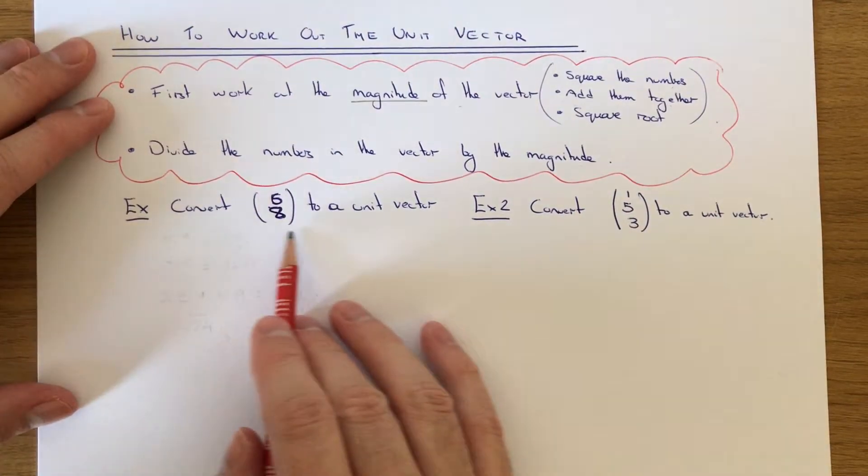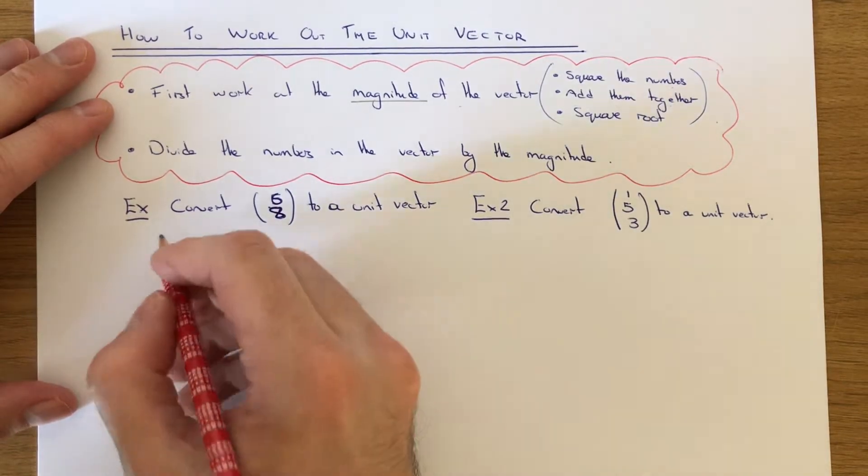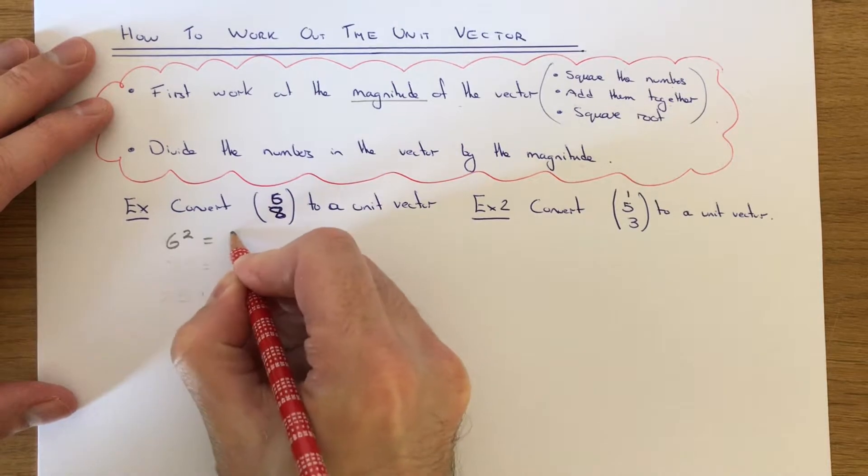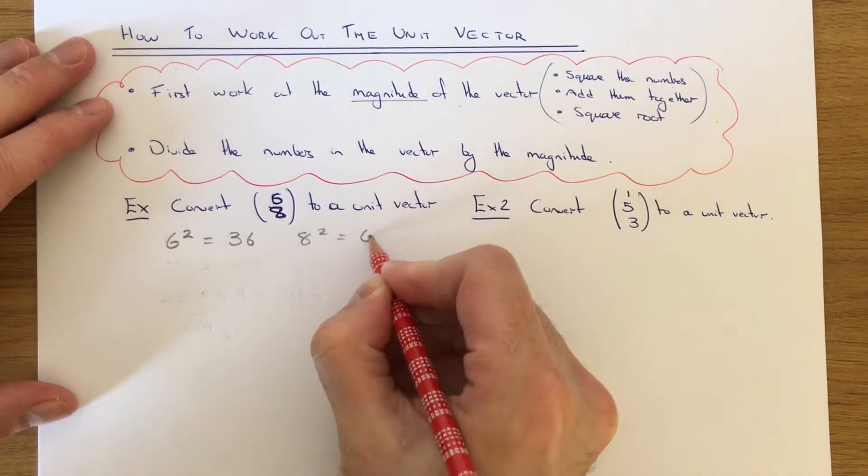Let's have a look at example 1. We're going to convert (6, 8) to a unit vector. The first step is to square the numbers in the vector. So 6 squared is 36, 8 squared is 64.